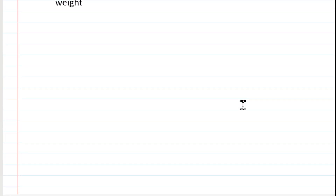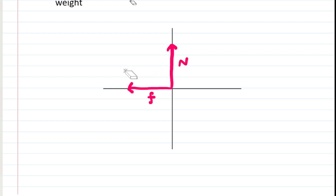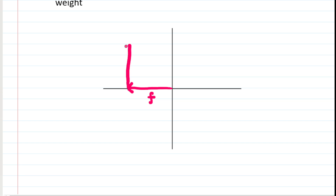Setting up this calculation, we look at the diagram and notice the tails of each vector are touching at the origin — a tail-to-tail arrangement. To add two vectors, we need tip-to-tail arrangement, so we drag the normal force over so its tail touches the tip of the F force. That is the tip-to-tail method, and the resultant force R runs from the tail of F to the tip of the normal force.